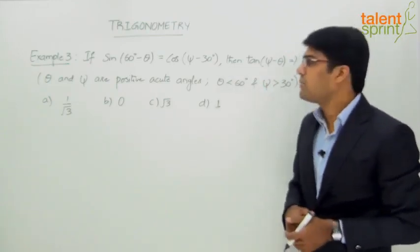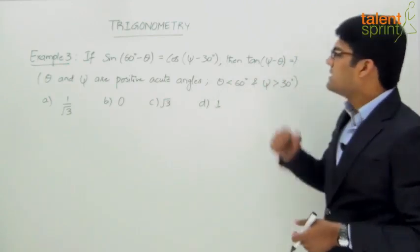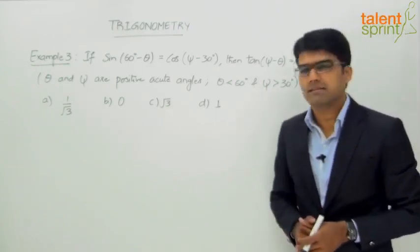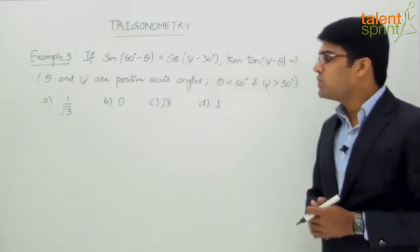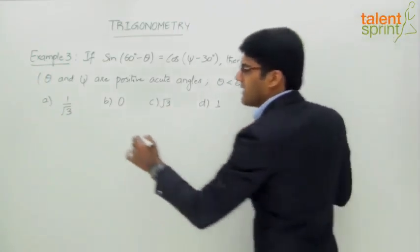...that θ and ψ are positive acute angles—acute angles means less than 90 degrees. θ is less than 60 degrees, whereas ψ is greater than 30 degrees. The given answer options are 1/√3, 0, √3, and 1. So let us see how to answer this question.